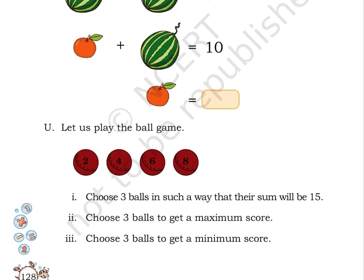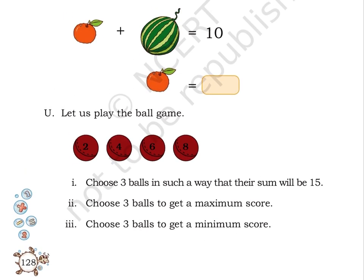Puzzle U: Let us play the ball game. Here on page number 128, there are 4 balls of red color given. And on each ball, there is a number given. The numbers given are 2, 4, 6, 8 respectively.